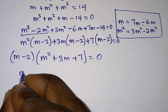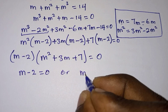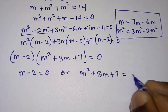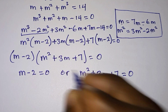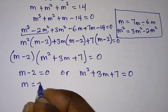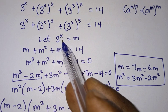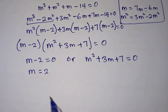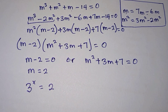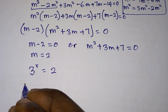At this point we can say that (m minus 2) equals zero, or the quadratic equation m squared plus 3m plus 7 equals zero.